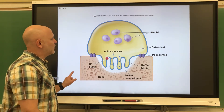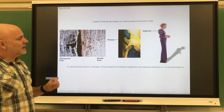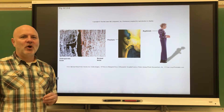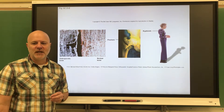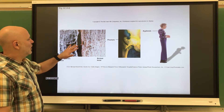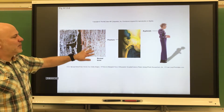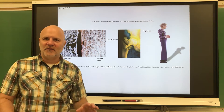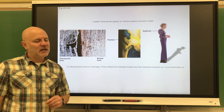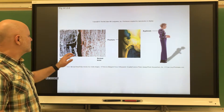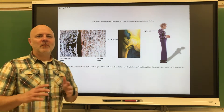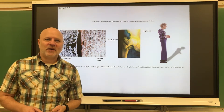Osteoporosis is a group of diseases in which bone reabsorption outpaces bone deposit. Your osteoclasts are working faster than your osteoblasts, so bone mass is reduced. Here's an osteoporotic bone versus a normal bone — there are many different types of osteoporosis.